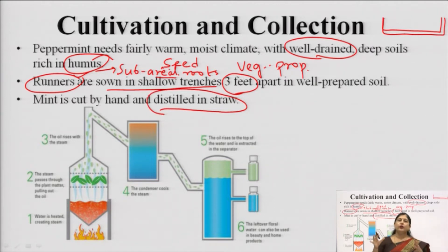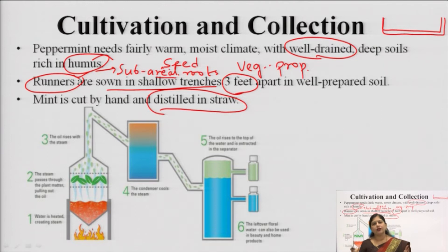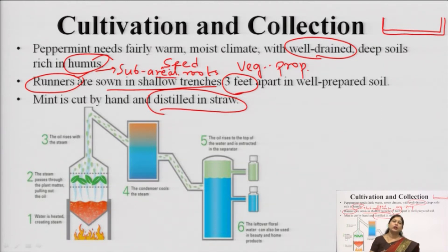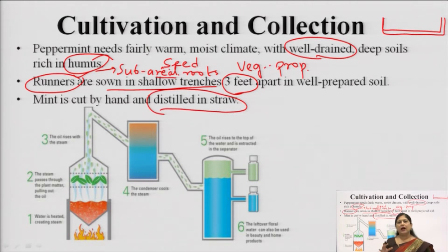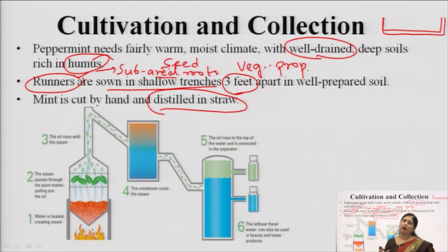Once the crops are grown — the plant grows very fast and reaches a maximum height of about 1 meter — hand cutting is the easiest method for removal. After cutting it is distilled. There are specific extraction units which collect the volatile oils from the leaves. This is how the collection of mentha oil is done.